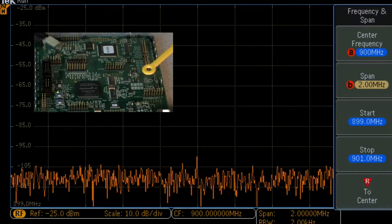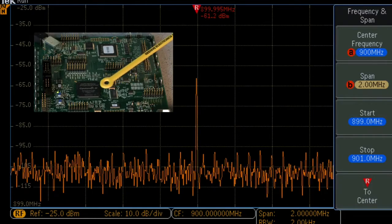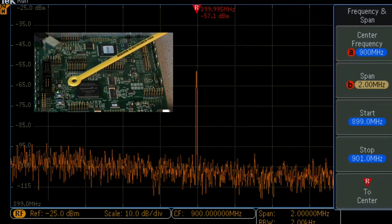Then we slowly move the loop antenna over the circuit board looking for the highest signal level at 900 megahertz.